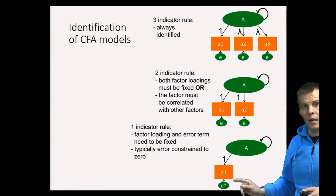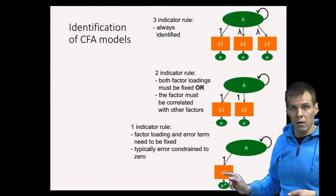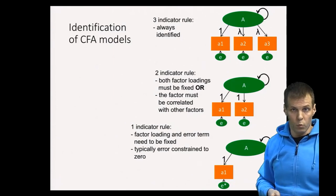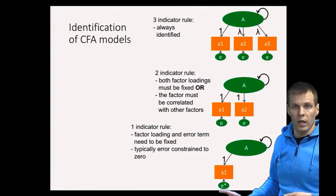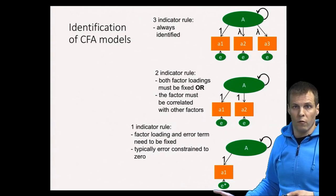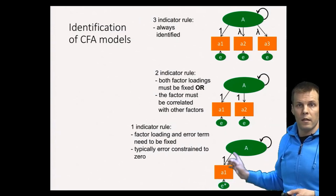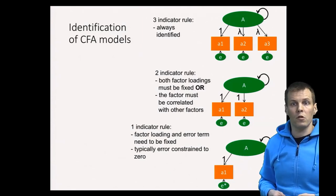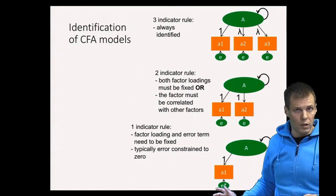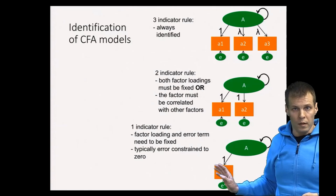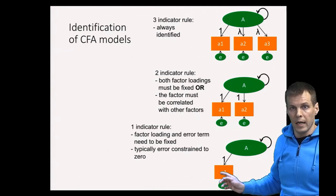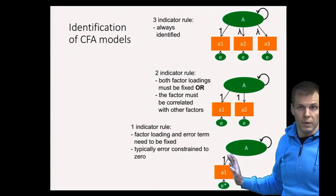For a factor with a single indicator, we cannot estimate the reliability of that indicator, because reliability cannot be estimated from just one measure. We have to assume the error variance — typically we fix it to zero, meaning we assume the construct is measured without any error. Alternatively, if we know the indicator has shown to be 80% reliable, we can fix the error variance to be 20% of the observed variance of the indicator, though this is rarely done in practice.